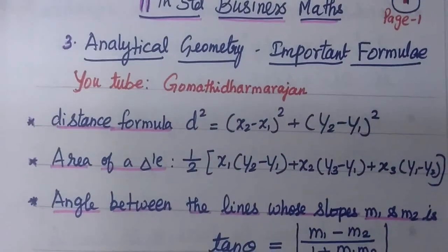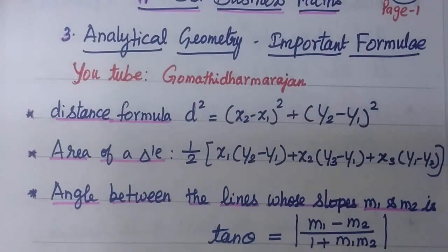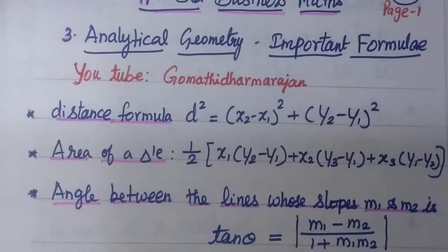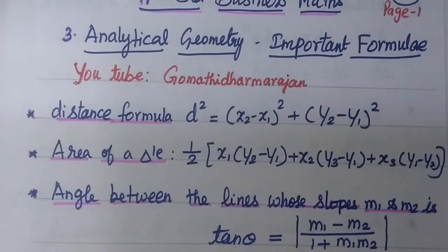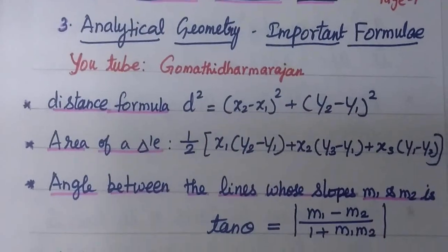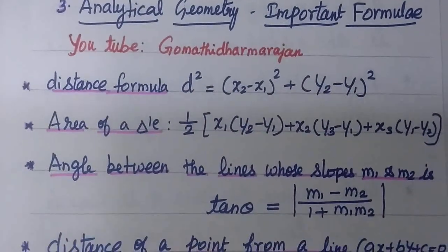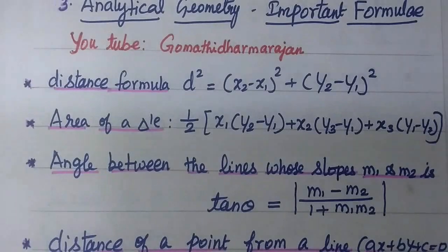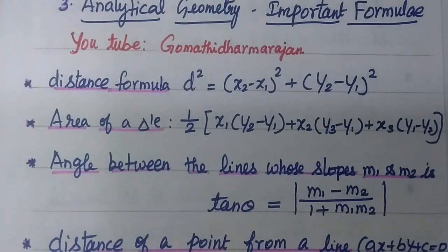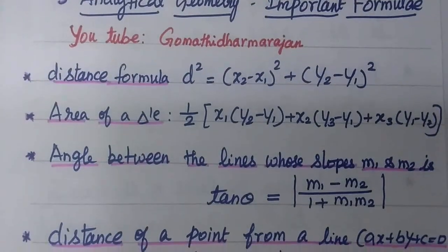Coming to the next one: the angle between two lines whose slopes are m1 and m2 is theta equal to tan inverse of the modulus of (m1 minus m2) by (1 plus m1 m2). Note the modulus value, and m1 and m2 are the slopes.